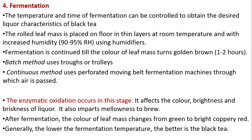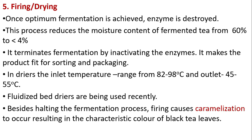After fermentation, the color of the leaf mass changes from green to bright coppery red. Generally, the lower the fermentation temperature, the better the black tea quality. Firing or drying: once optimum fermentation is achieved, enzymes are destroyed. This process reduces moisture content from 60% to less than 4%, terminates fermentation, and makes the product fit for sorting and packaging. Dryer inlet temperature ranges from 82 to 98°C and outlet temperature 45 to 55°C. Fluidized bed dryers are used recently. Firing also causes caramelization, resulting in the characteristic color of black tea leaves.